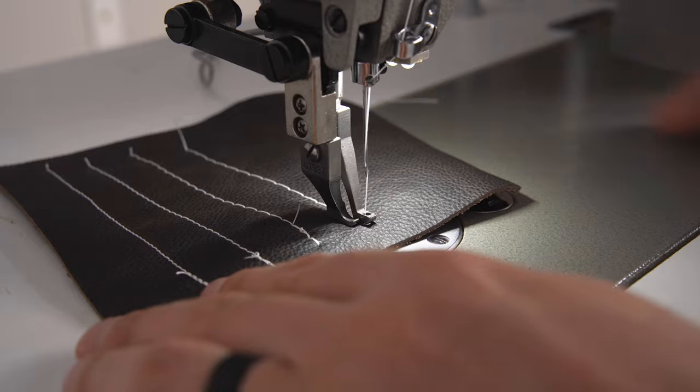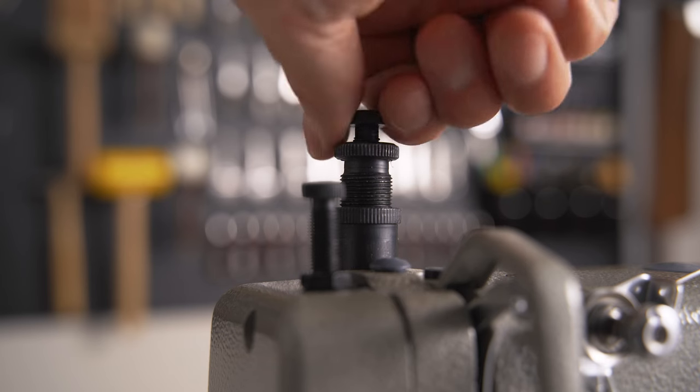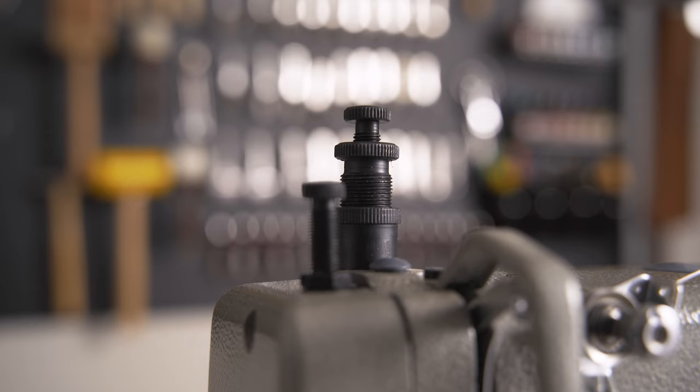The outside foot pressure can be adjusted by turning the outside foot presser thumb screw clockwise for more pressure or counterclockwise for less pressure.